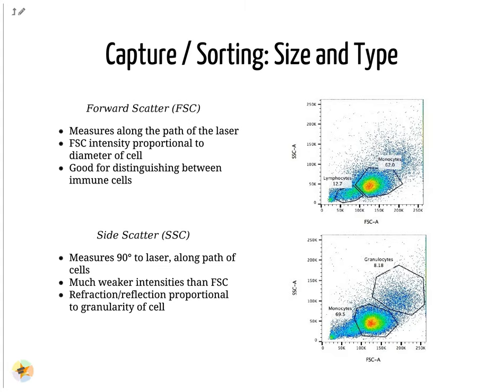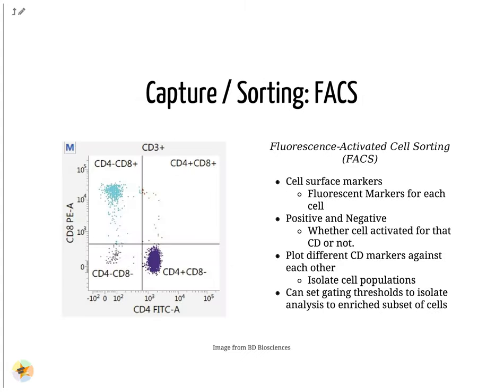Cells can also be gated and characterized by their cell surface markers via FACS. By plotting different surface marker intensities against one another, cells can be separated, gated, and labeled based on these fluorescent properties.